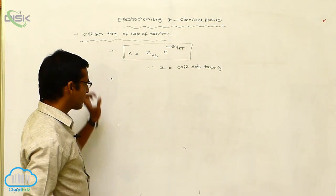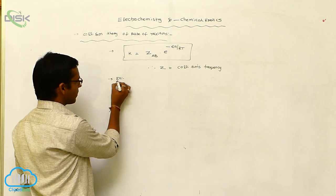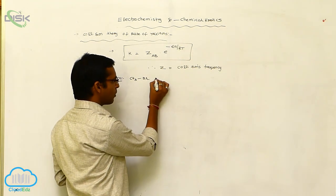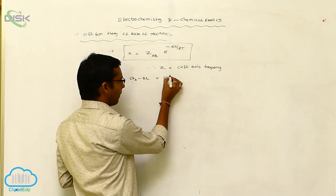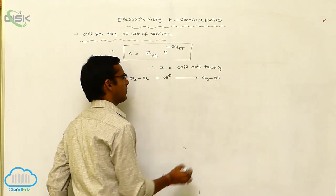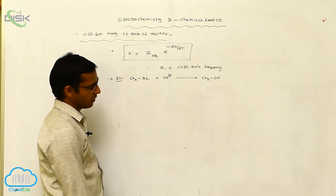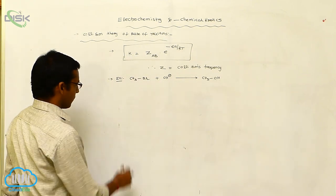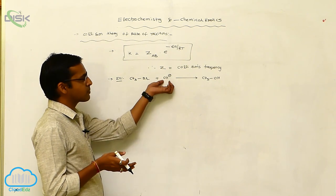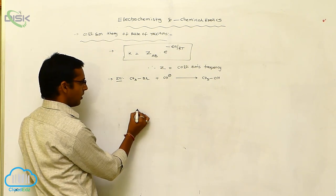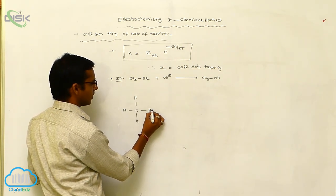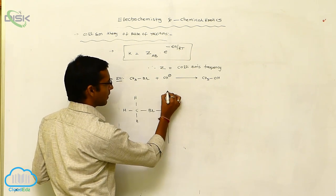To understand collision theory, consider a simple organic reaction example: methyl bromide (CH₃Br) reacted with a base (OH⁻). In the presence of base, it is converted to methyl alcohol and bromide is liberated. We can write two types of reactions based on orientation.